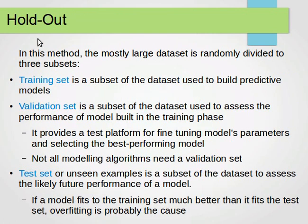In the holdout method, we assume we have a large dataset. We randomly divide it into three subsets: a training set, a validation set, and a test set.